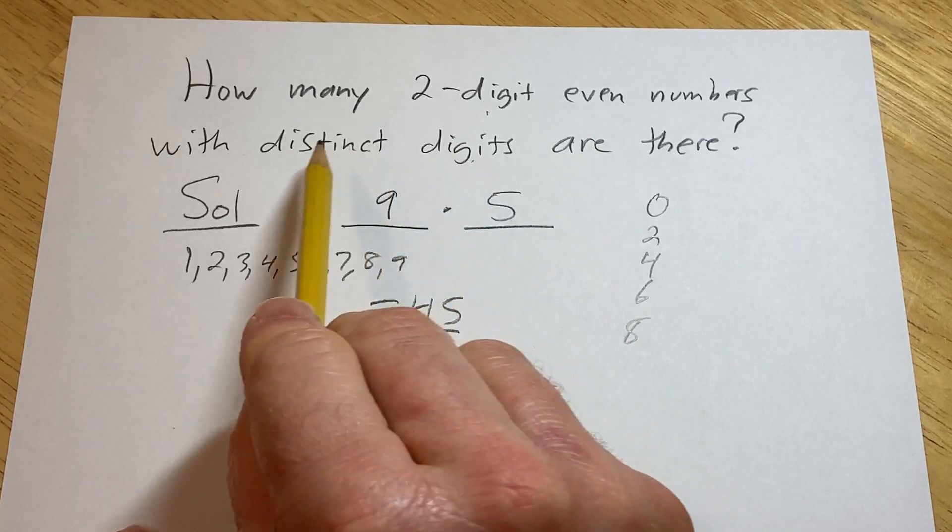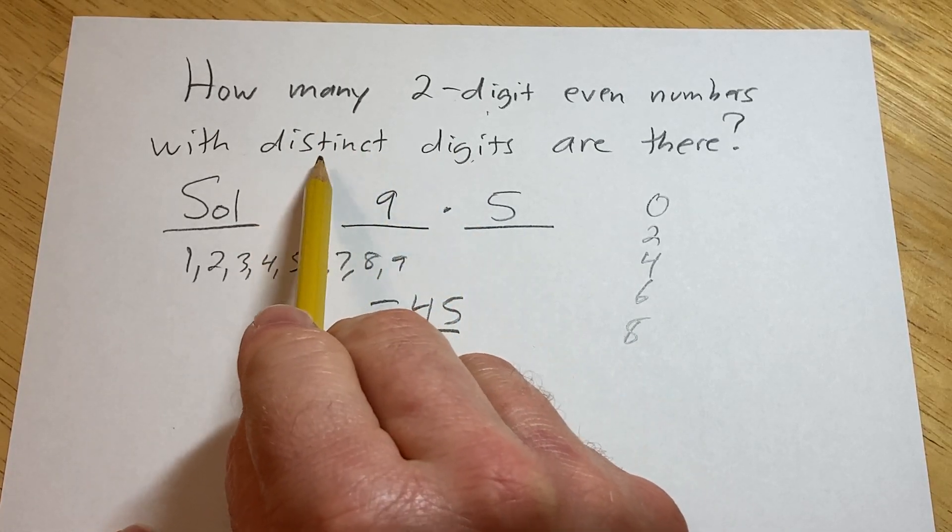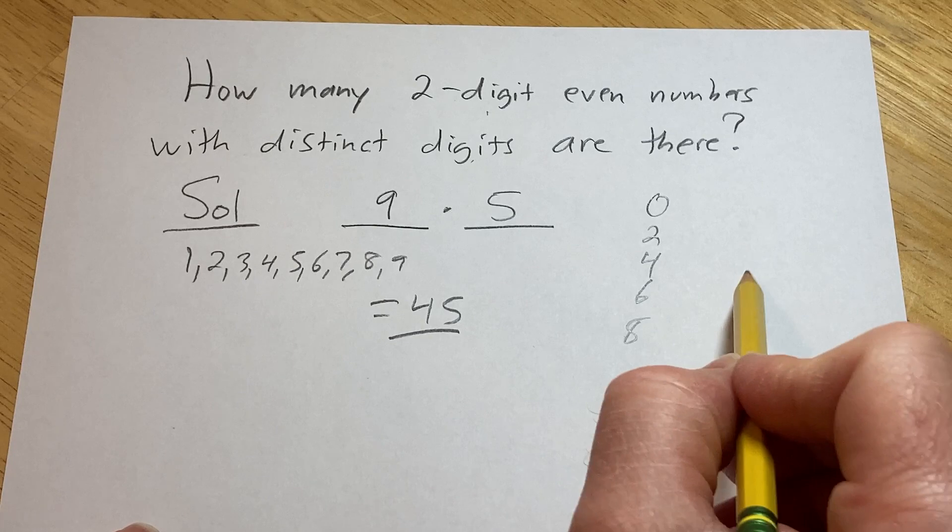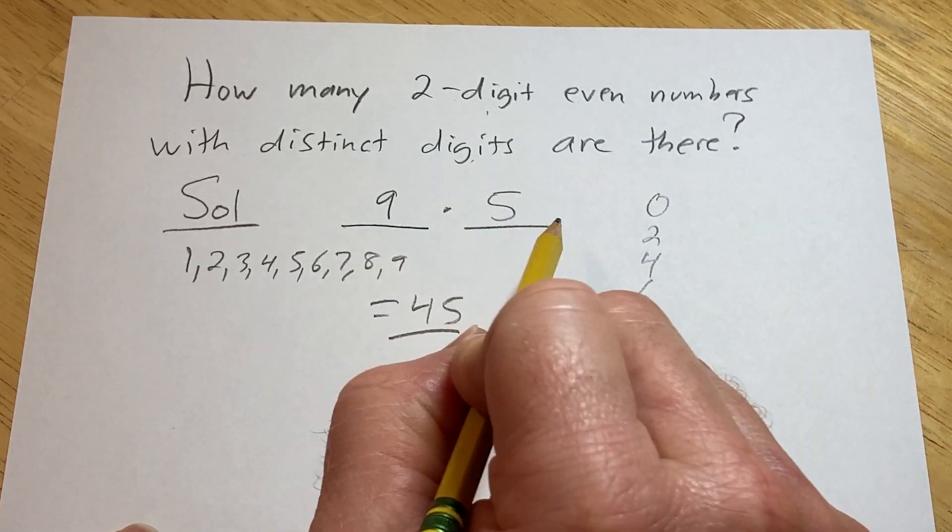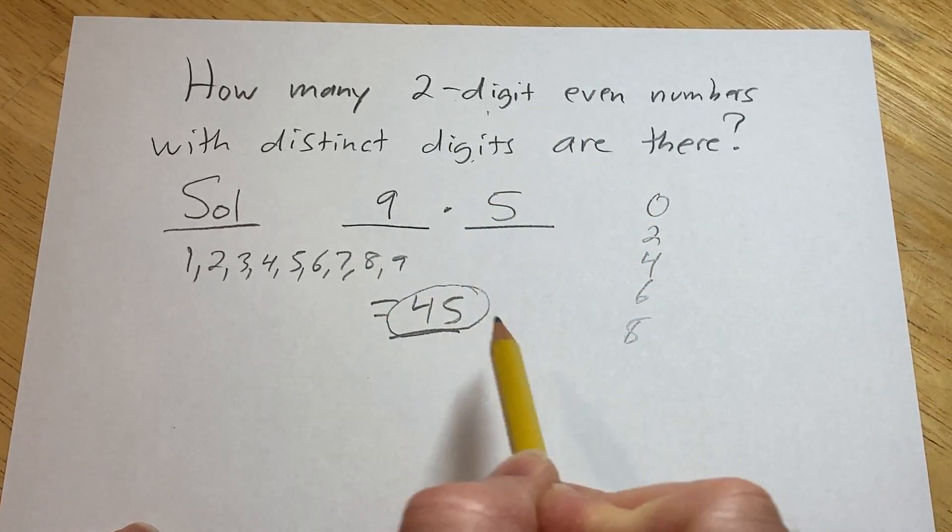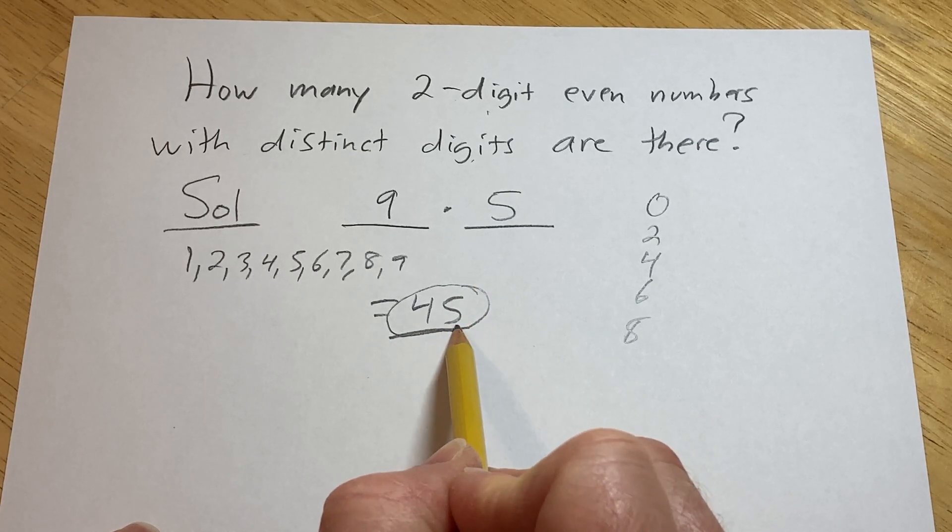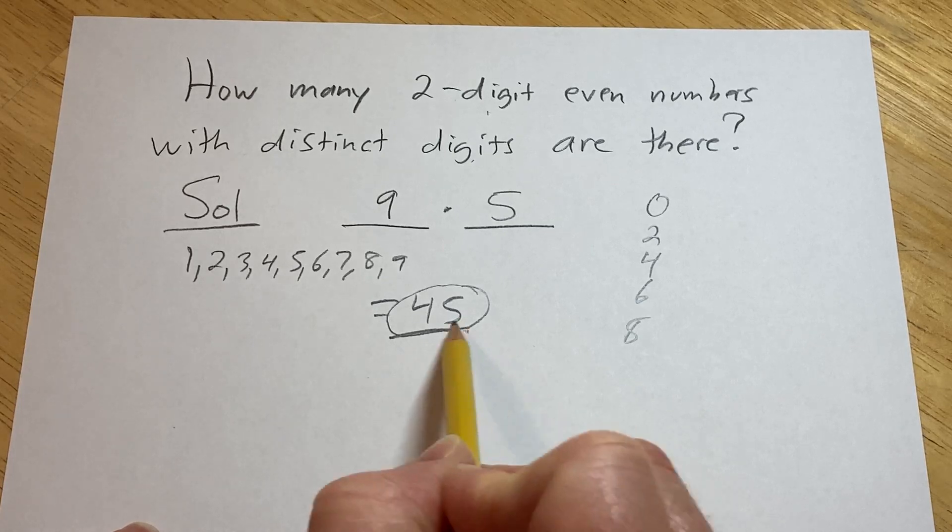Now what we'll do is subtract the ones that don't have distinct digits, and then we'll end up with only the distinct digits. So this is the total number of two-digit even numbers. Some of these don't have distinct digits, so we need to eliminate those.